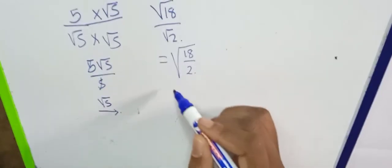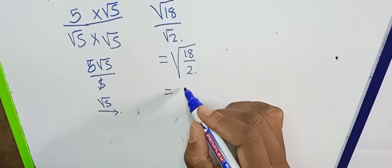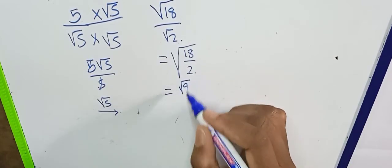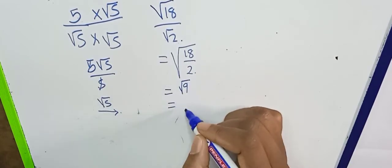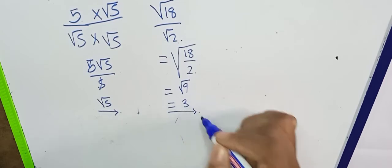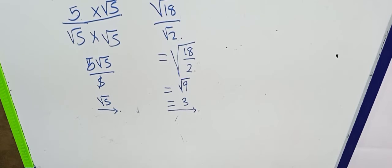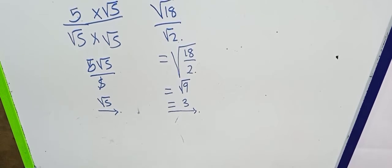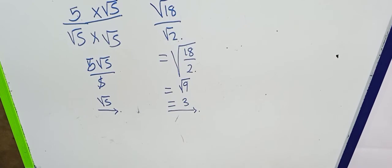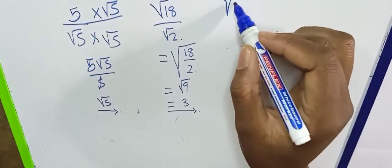What about root 18 over root 2? You can simply divide 18 by 2 to get 9 under the radical, and the square root of 9 is 3. So the square root of 18 over the square root of 2 equals 3.